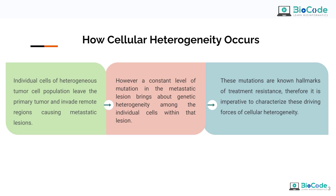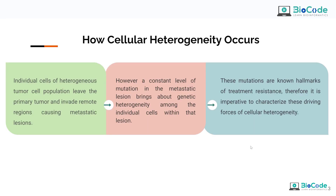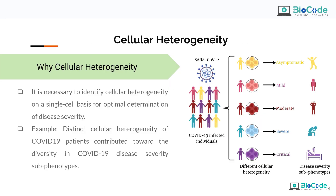Individual cells of a heterogeneous tumor cell population leave the primary tumor and invade remote regions, which is known as metastatic lesions. A constant level of mutation in the metastatic lesion brings about genetic heterogeneity, and genetic expression patterns govern what the cell population might look like. This cellular heterogeneity can also be due to mutations — these mutations are known as hallmarks of treatment resistance. Therefore, it is imperative to characterize the driving forces of cellular heterogeneity and understand the gene expression profile of each of these cell populations.